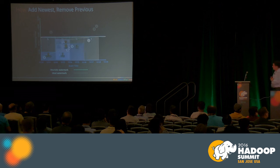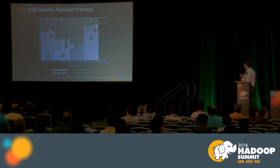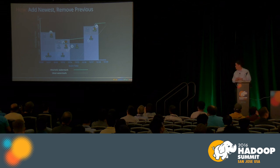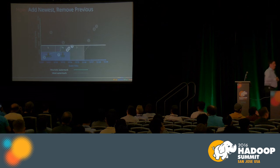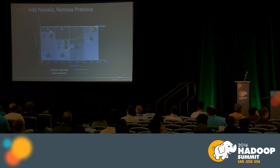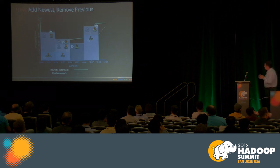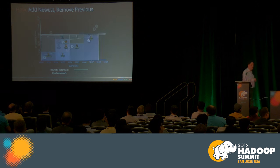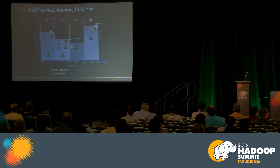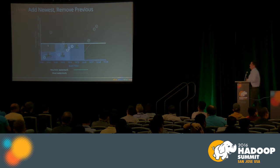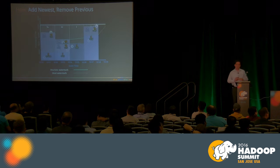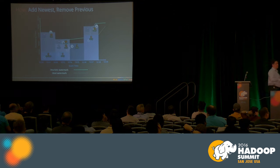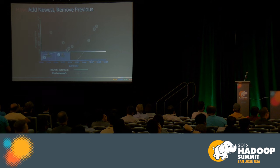To summarize the full streaming pipeline: it produces early results every minute, produces results we believe are correct once the watermark passes the end of the window, and if we're wrong, it retracts the previous result and publishes a new one. This is a really complex system built with zero changes to the core business logic — just by tweaking parameters in this clean, separated API.